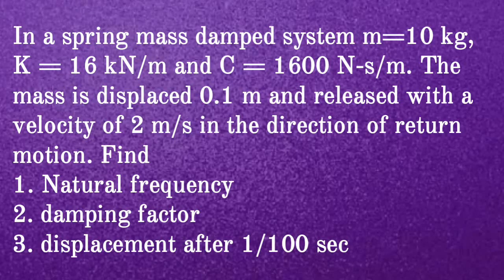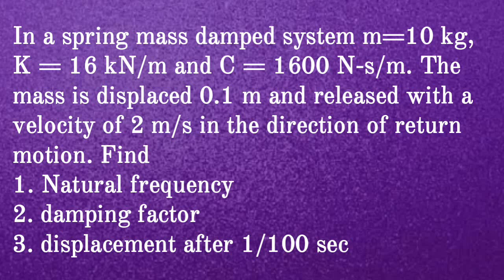Given question: In a spring-mass-damped system, M is equal to 10 kg, K is equal to 16 kN per meter, and C is equal to 1600 Ns per meter. The mass is displaced 0.1 meter and released with a velocity of 2 m per second in the direction of return motion. Find: first, natural frequency; second, damping factor; third, displacement after 1/100 second.